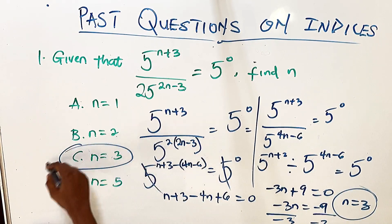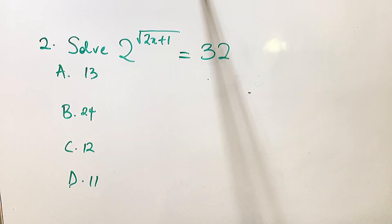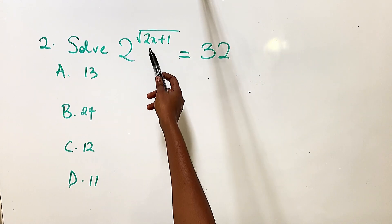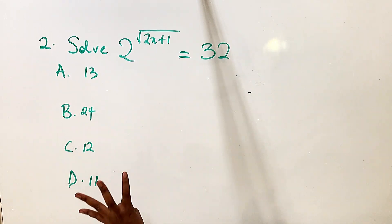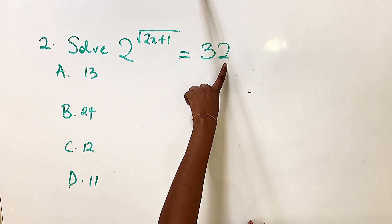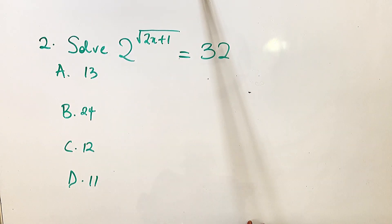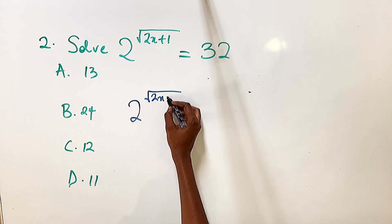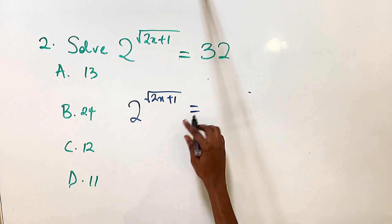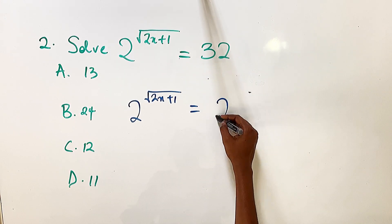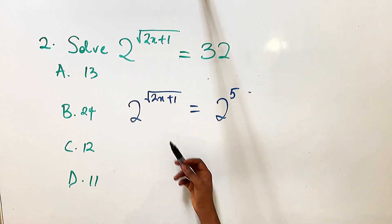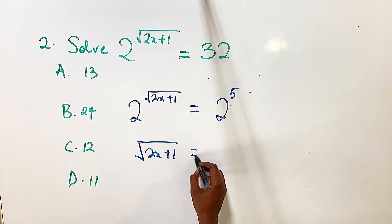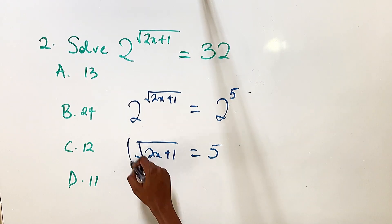Our second question says: solve 2 raised to the power of the square root of 2x plus 1, equal to 32. As mentioned in the first question, you first put them in the same base and then equate the powers. So 2 raised to the power of the square root of 2x plus 1 remains as is, and 32 is the same as 2 raised to power 5. So we equate the powers: the square root of 2x plus 1 equals 5.